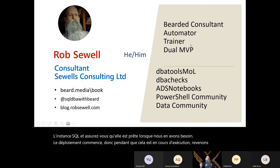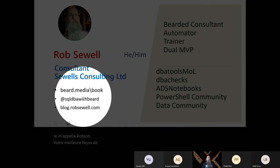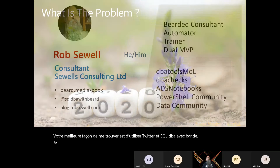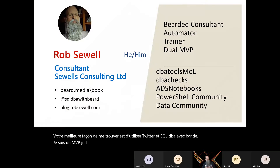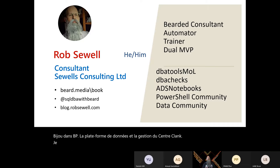So, who am I? My name is Rob Saul. Your best way of finding me is on Twitter: SQL DBA with Beard. I am a dual MVP, both data platform and cloud and center management. I do a lot of work in both the PowerShell community and the data community, especially in and around DBA talks.